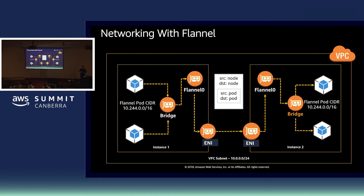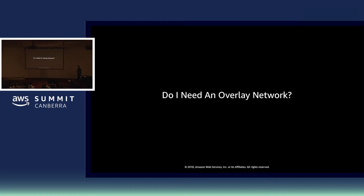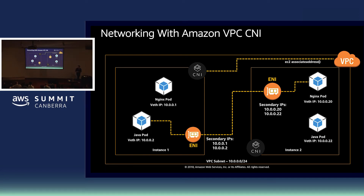Do we need to use an overlay network? No — there are other options. I already mentioned kubenet doesn't use overlay networks. The other option we're seeing customers turn to is a CNI plugin we actually created to help deploy the EKS service — one that natively integrates with our VPCs. For every node provisioned into the cluster, we give it an Elastic Network Interface and allocate multiple secondary IP addresses to that ENI. Every time a new pod is provisioned on that node, it gets allocated one of those secondary IP addresses.